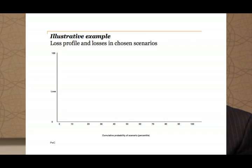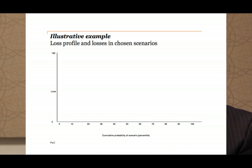So Mark, can I hand over to you to talk us through an example? Sure, Sandra. If we begin with a very simple example that assumes perfect knowledge, just to try to illustrate the point. Let's assume that a bank is able to look at all the possible scenarios and range them in order of severity, from the 0th percentile up to the 100th percentile. If we then look at a diagram representing what the loss profile might look like over those scenarios...